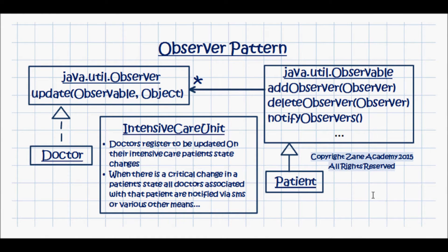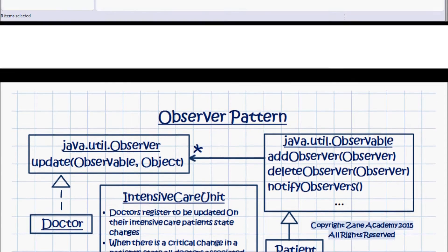The example used here is an intensive care unit where doctors register to be updated on their intensive care patients' state changes. When there is a critical change in a patient's state, all doctors associated with that patient are notified via SMS or various other means. The Doctor class implements the java.util.Observer interface and implements the update method, and the Patient class extends from java.util.Observable.